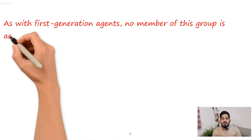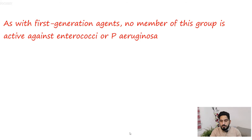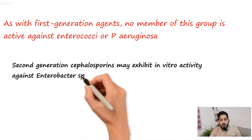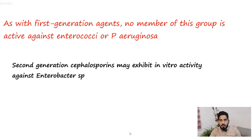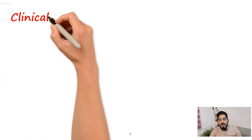As with first generation agents, no members of this group are active against enterococci or Pseudomonas aeruginosa. Second generation cephalosporins show activity against Enterobacter species in vitro but not in vivo.